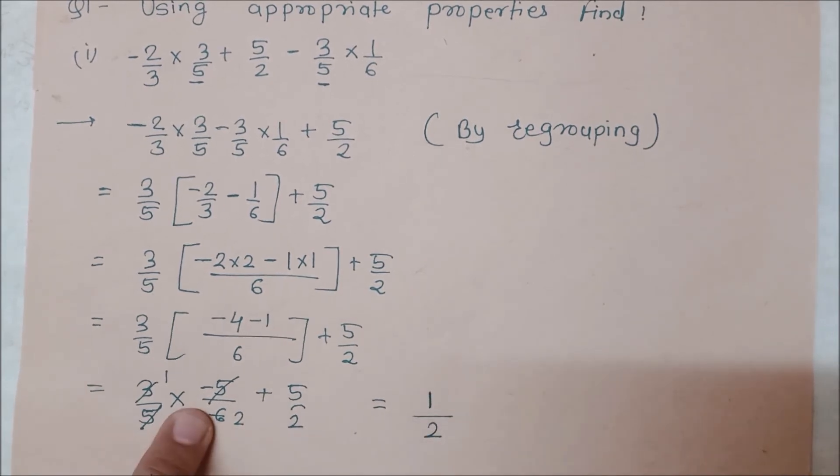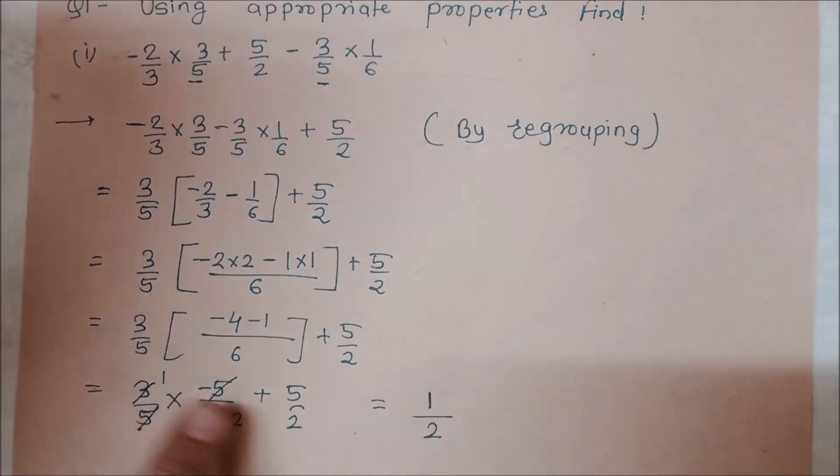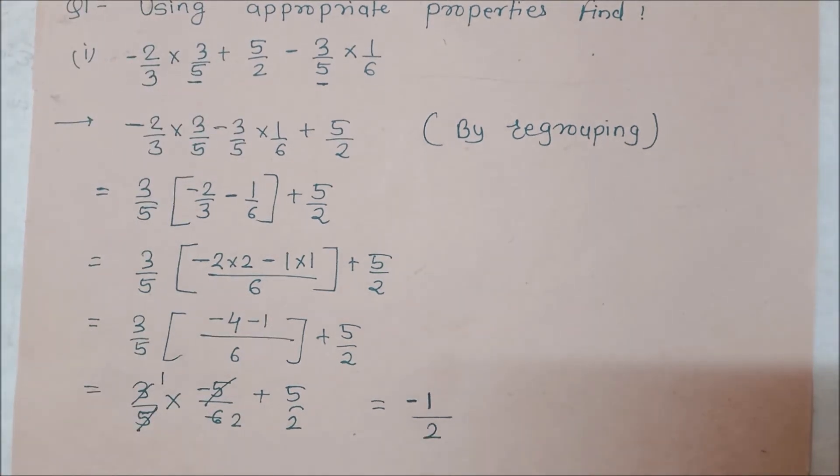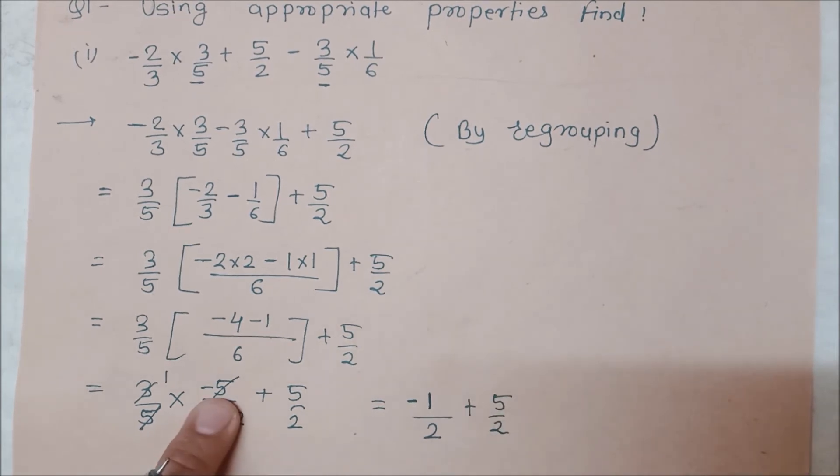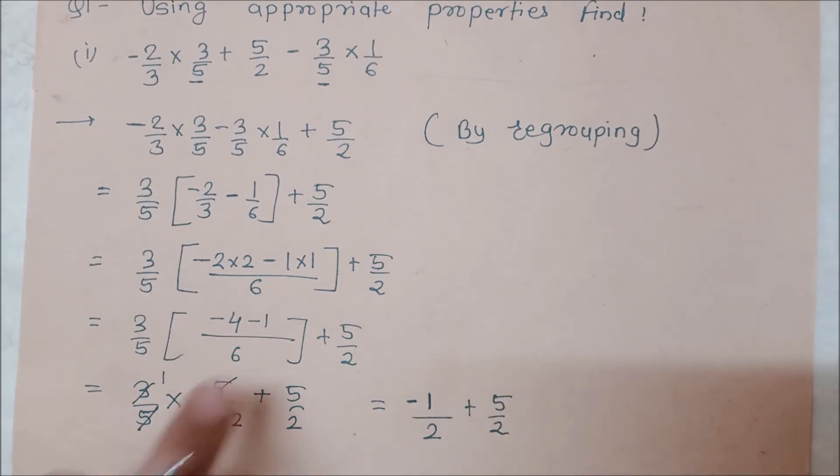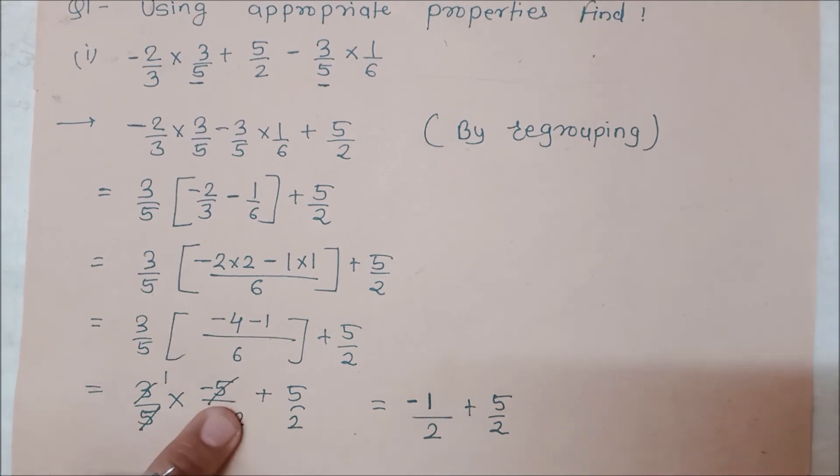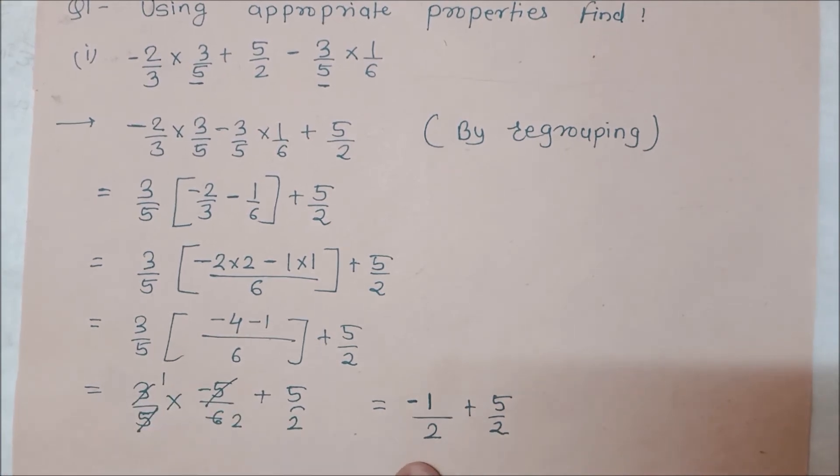Now this is minus 1 into 1. Because this is minus 1, that will be minus 1 upon 2. It has been done. It will add 5 to 2. Why is minus 1? Because this was minus 5, 5 and 5 cut, so minus 1, minus 1 times 1 is minus 1 upon 2.